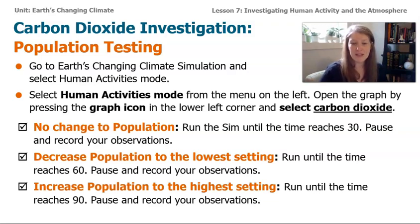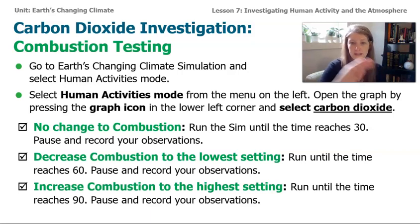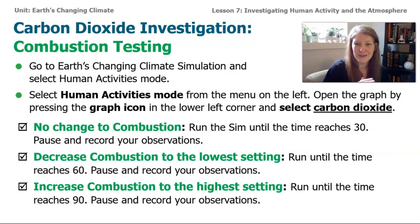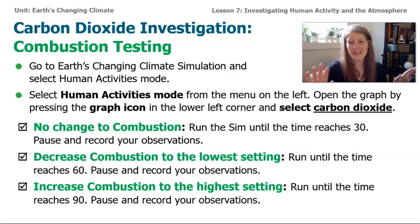Then increase the population to the highest setting and run it until the timer reaches 90, and record those observations. Then reset it — still in the graph, still with carbon dioxide — but this time look at combustion only. Run it with no change to the combustion for the first 30 seconds. Then move it down to the lowest setting for combustion, run it for 30 more seconds, pause at 60, then change it to the highest setting and run it until 90. When running the combustion test, leave the population just as it is.